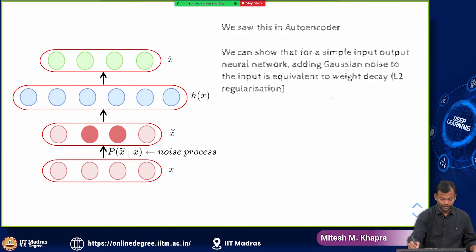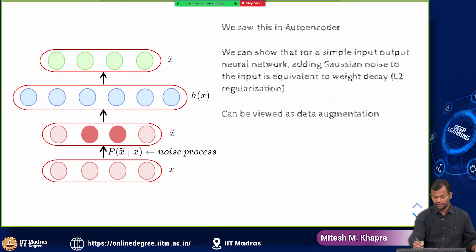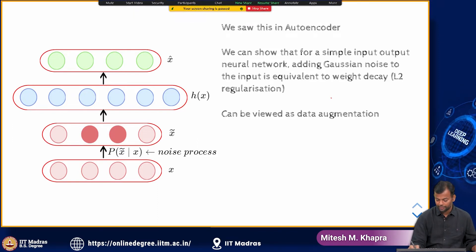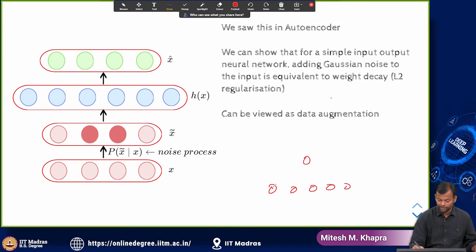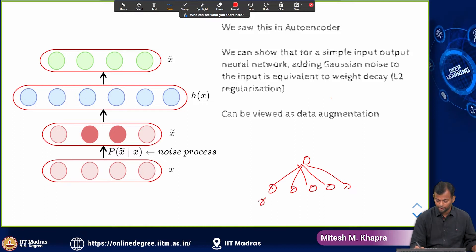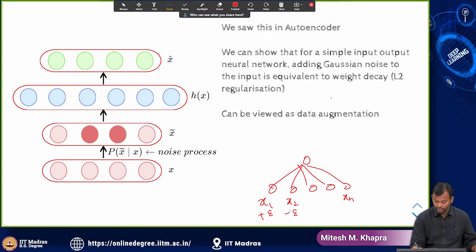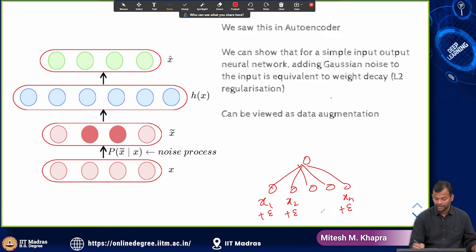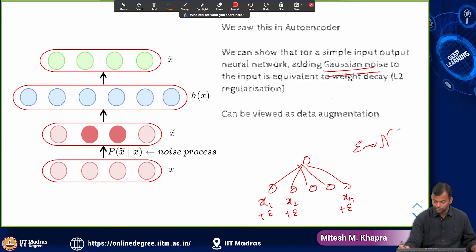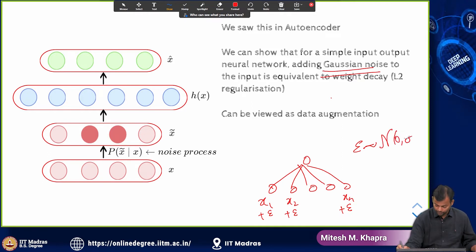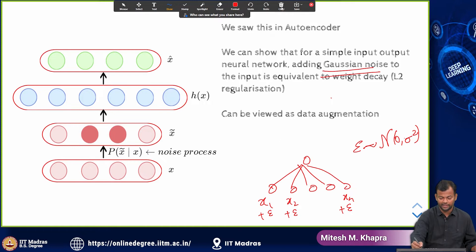What we can actually show is that for a simple input-output network with no hidden layer — just inputs x1 to xn feeding directly to the output — if you add Gaussian noise with zero mean and some variance to all inputs, then this is actually equivalent to L2 regularization. We will see that on the next slide.